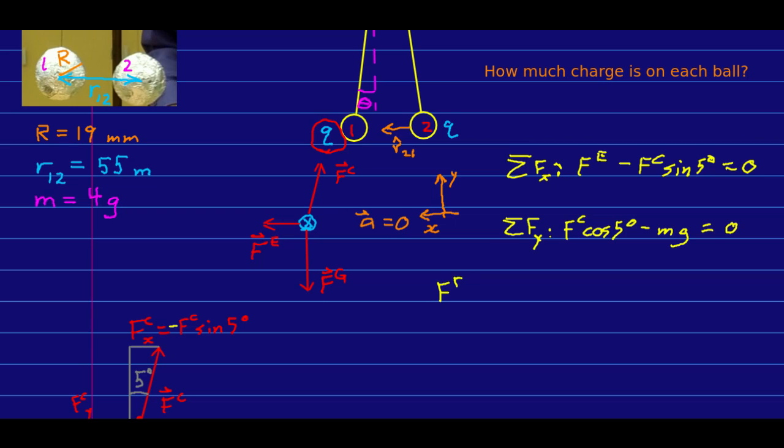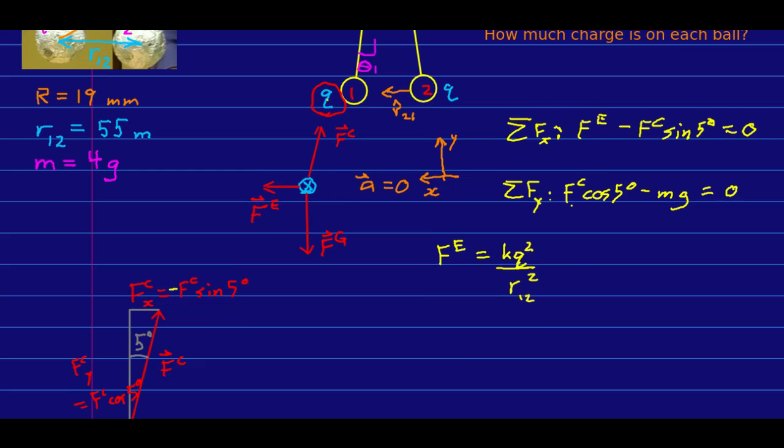So far, q isn't in any of our equations. However, we are modeling Fe as being kqq, right? It is the charge on the target times the charge on the agent, but those are both just q, so I'm going to have kq squared over r12 squared. That is Fe. Once I put that in here, I have equations that I can solve for q. My other unknown is Fc, but I have enough equations that I can get rid of that.